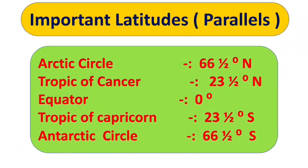Now let us have a look at some important latitudes. The Arctic Circle is at 66.5 degrees north. The Tropic of Cancer is at 23.5 degrees north. The equator is at 0 degrees. The Tropic of Capricorn is at 23.5 degrees south. And the Antarctic Circle is at 66.5 degrees south.